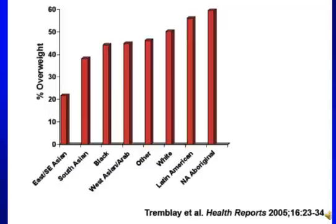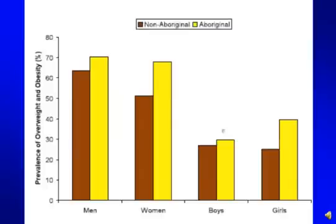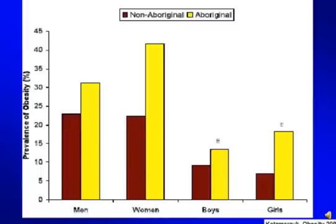The prevalence of overweight varies substantially with ethnicity. In an analysis done a couple of years back, the difference between self-ascribed North American Aboriginals is about three times that of East and Southeast Asians. Looking more closely at the Aboriginal and non-Aboriginal population in Canada, there is significantly higher prevalence of overweight or obesity in the Aboriginal population for both boys and girls. When looking at obesity alone, this difference is even more pronounced, suggesting the obesity problem in the Aboriginal population is more developed and more serious.